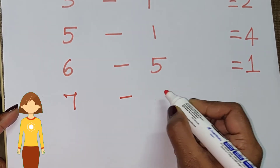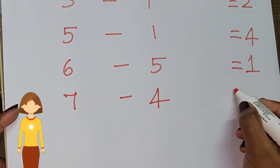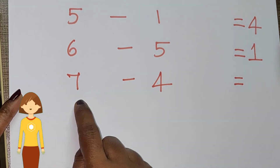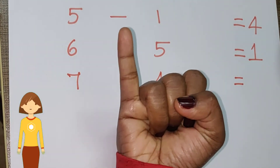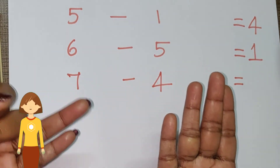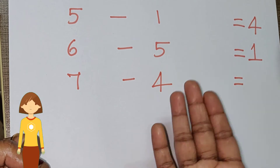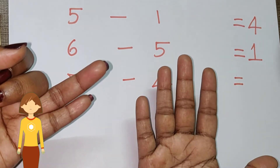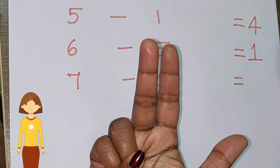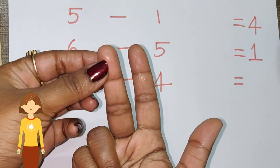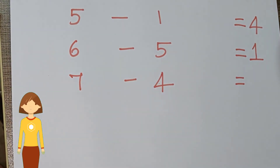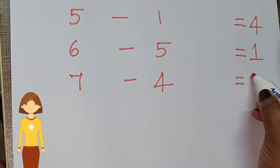Another problem: seven minus four is equal to dash. Seven in fingers — one, two, three, four, five, six, seven. Close four fingers — one, two, three, four. Remaining open fingers: one, two, three. Only three fingers are open, so the answer is three.